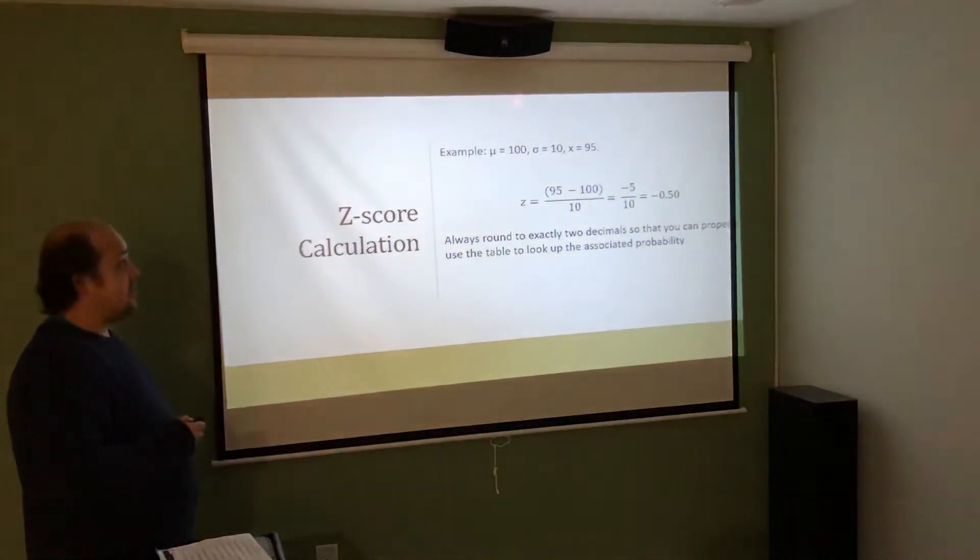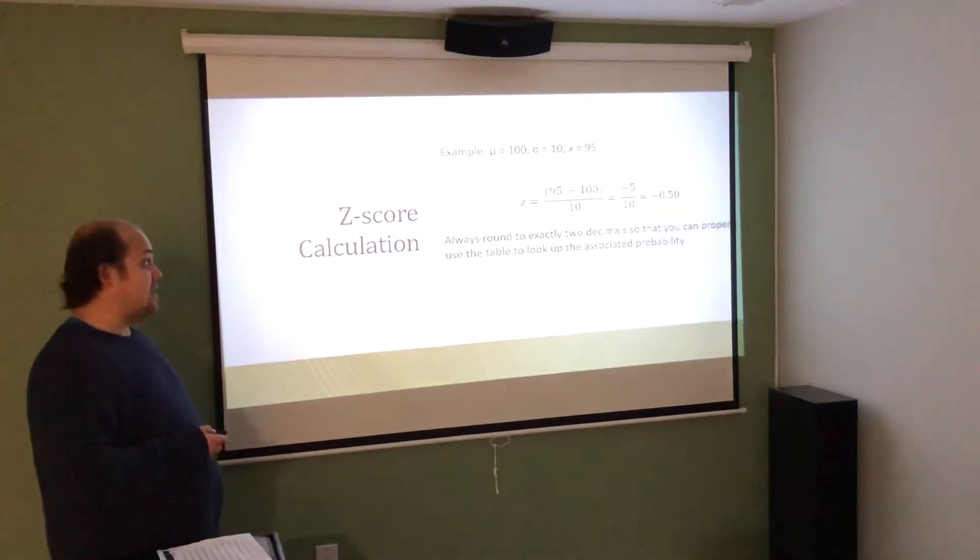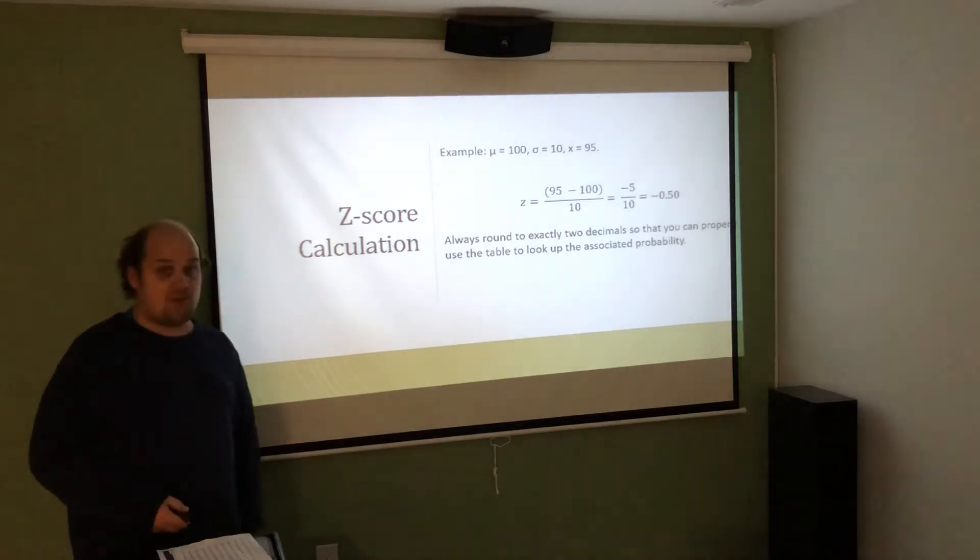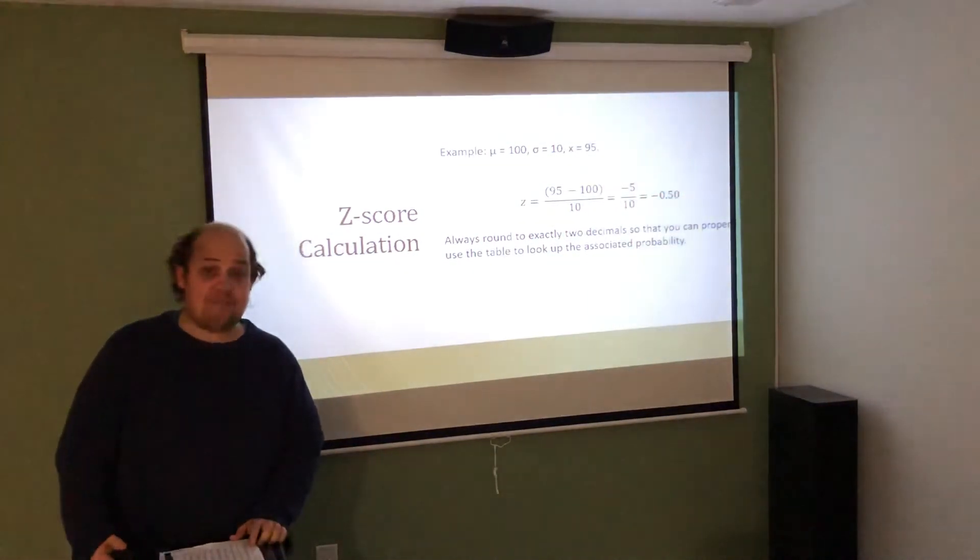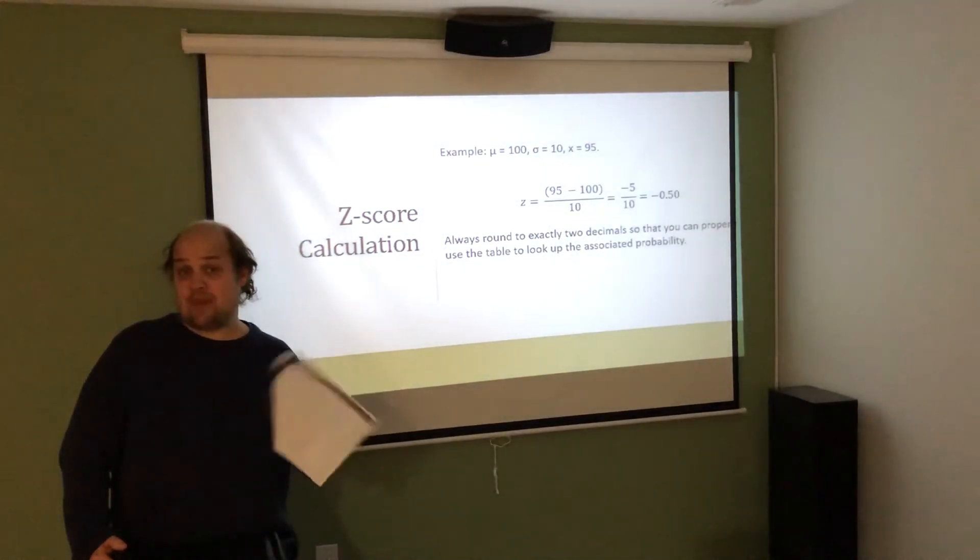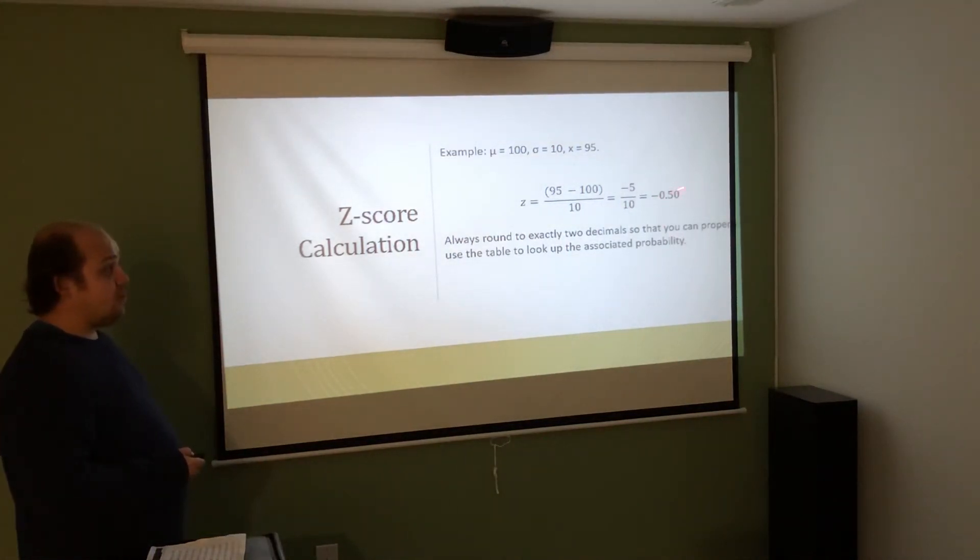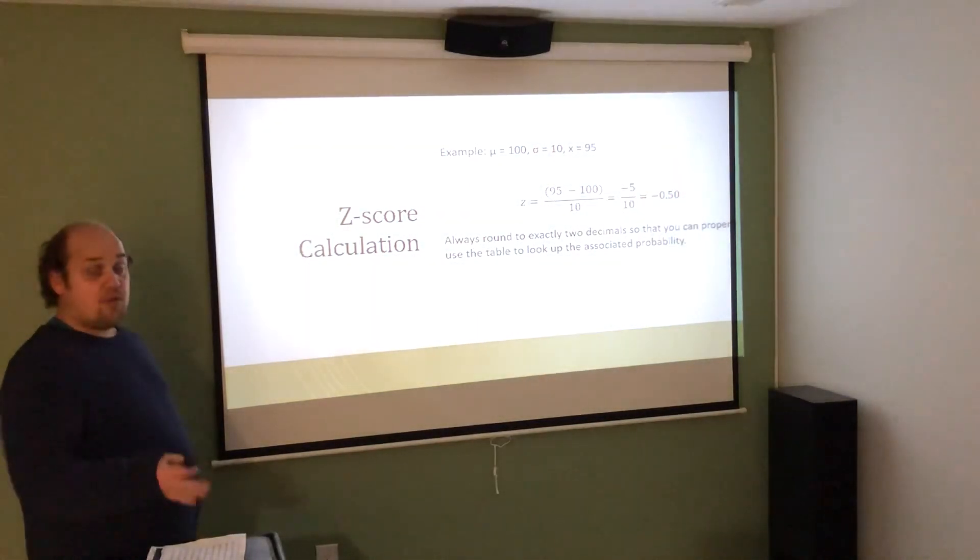So, for instance, if I was told that the distribution has a mean of 100 and a standard deviation of 10, and I wanted to know how many standard deviations above or below the mean an X value of 95 was, I'd do the X value, 95, minus the mean, 100, divided by the standard deviation of 10. I always do the top, subtraction, or addition first. 95 minus 100 gives me negative 5. I then do the division, negative 5 divided by 10, gives me negative 0.50. Really, it gives me negative 0.5, but I always include that extra digit just to make sure it agrees with the way my table is written. So, I would say this as negative 0.50. In general, I always want you to round to exactly two decimals so that you can find the answer in the table.